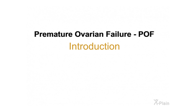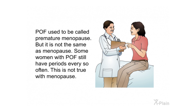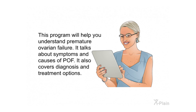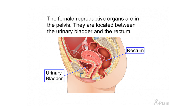Premature ovarian failure, also called POF, is when a woman's ovaries stop working before she is 40. POF used to be called premature menopause, but it is not the same as menopause. Some women with POF still have periods every so often, which is not true with menopause. This program will help you understand POF, including its symptoms, causes, diagnosis, and treatment options.